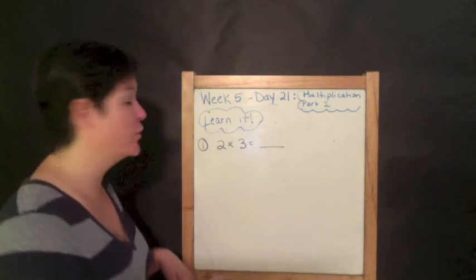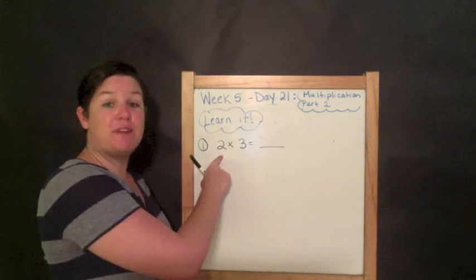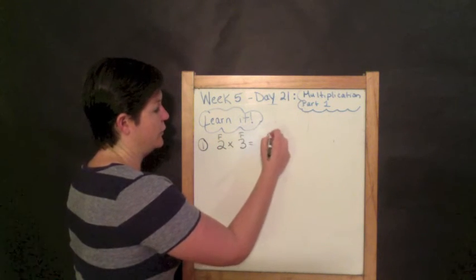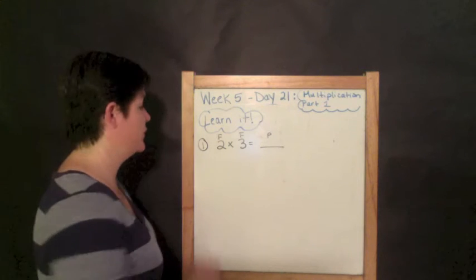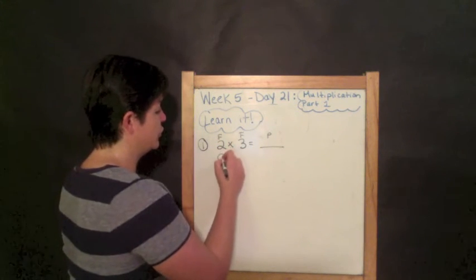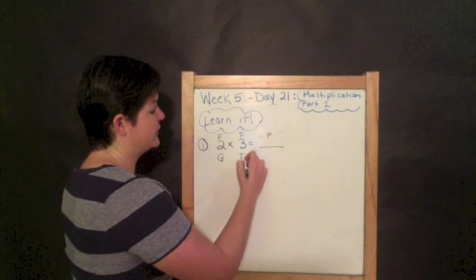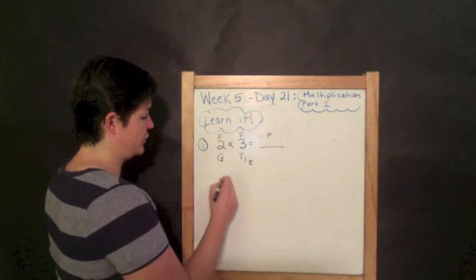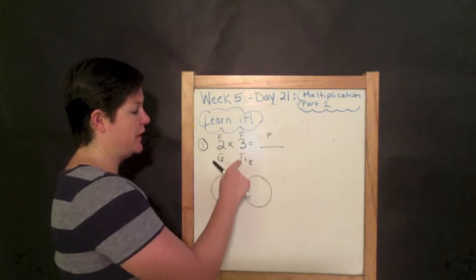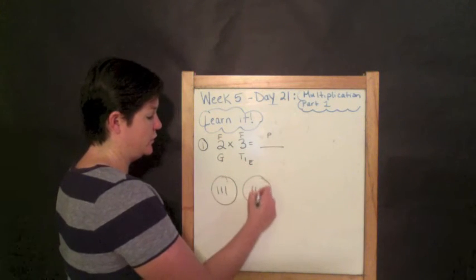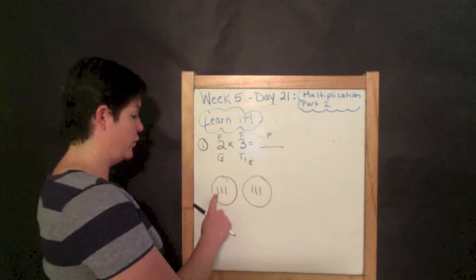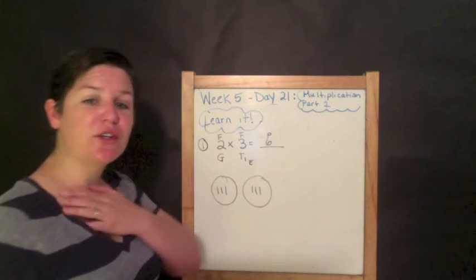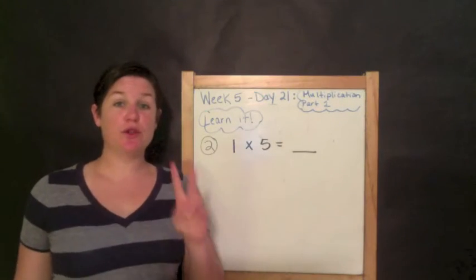Our first factor is the number of groups and the second factor — three — is the things in each, or T.I.E. as I like to call it. So we're going to do two groups with three things in each. One, two, three — one, two, three. Now our total: one, two, three, four, five, six. So our product, our answer, our total is six.